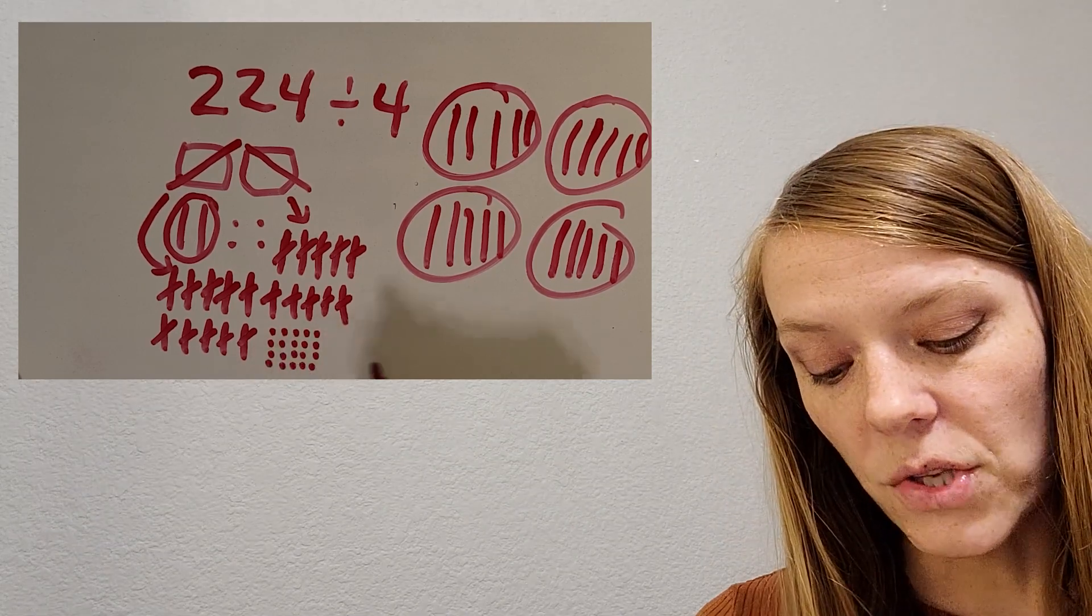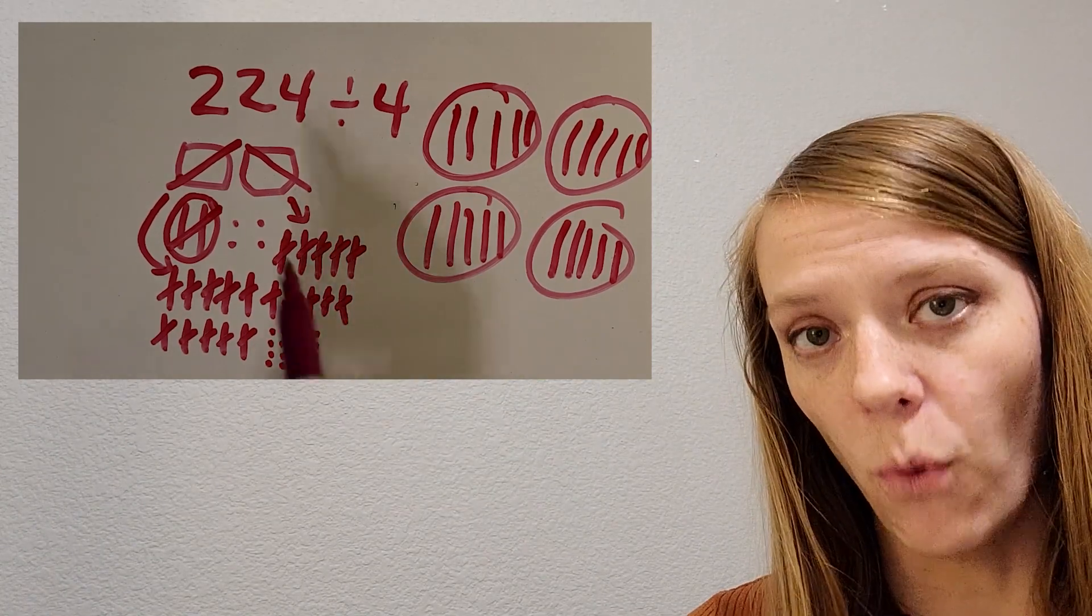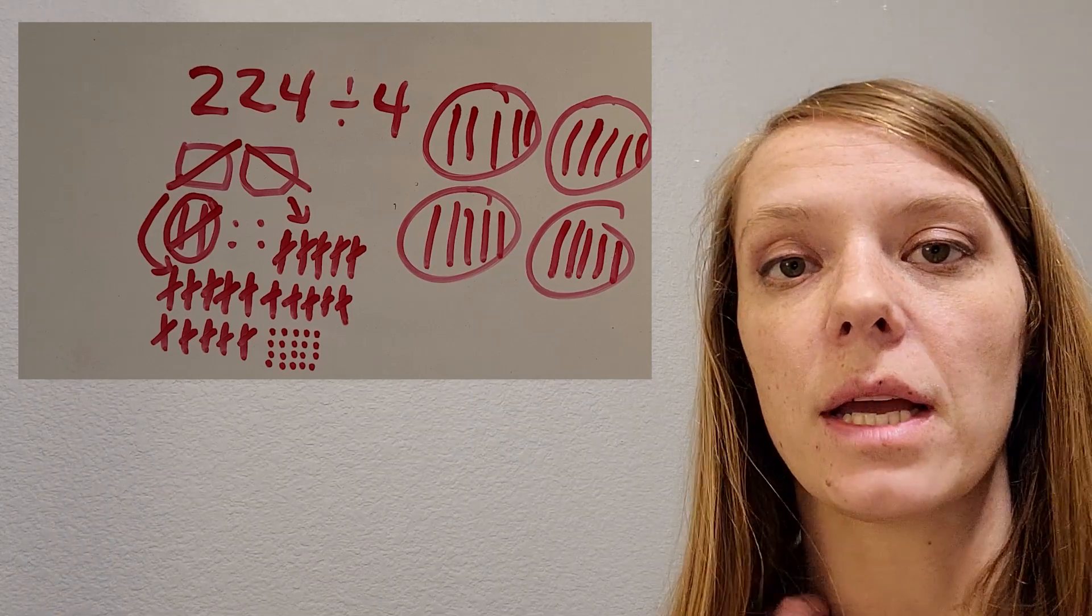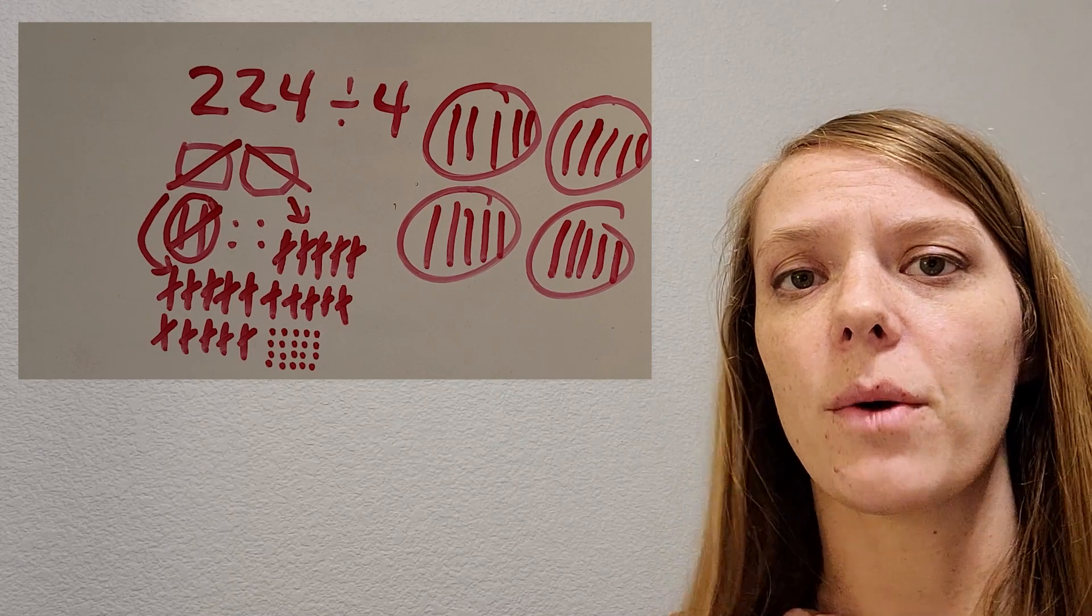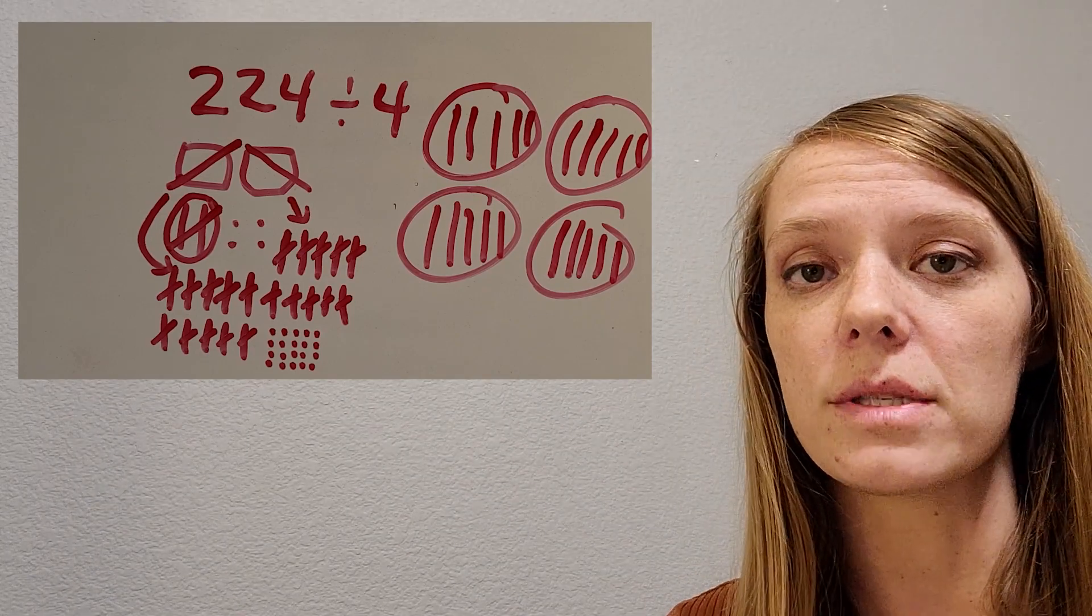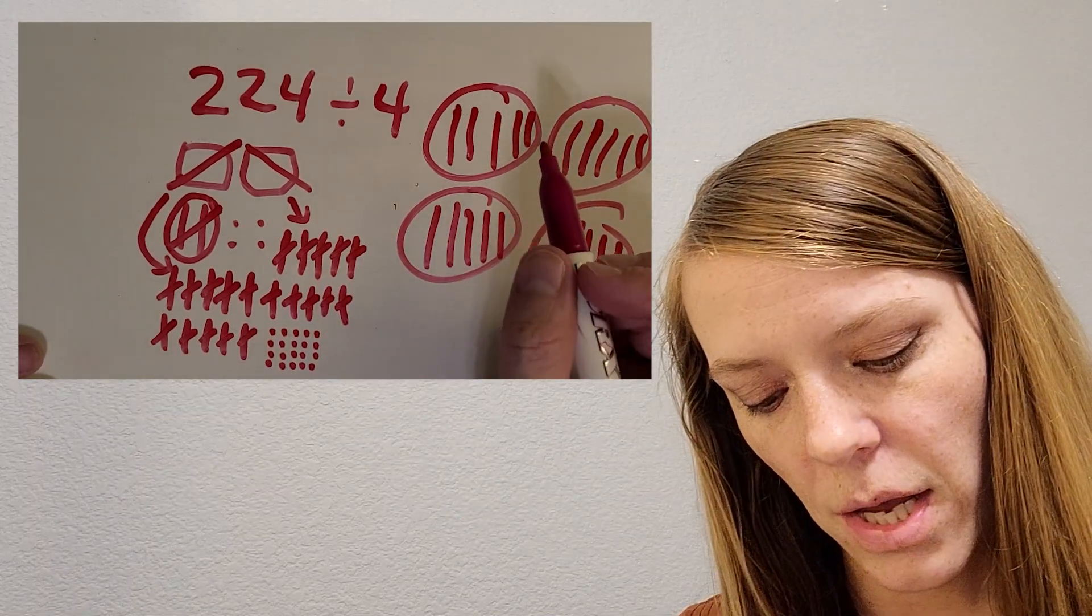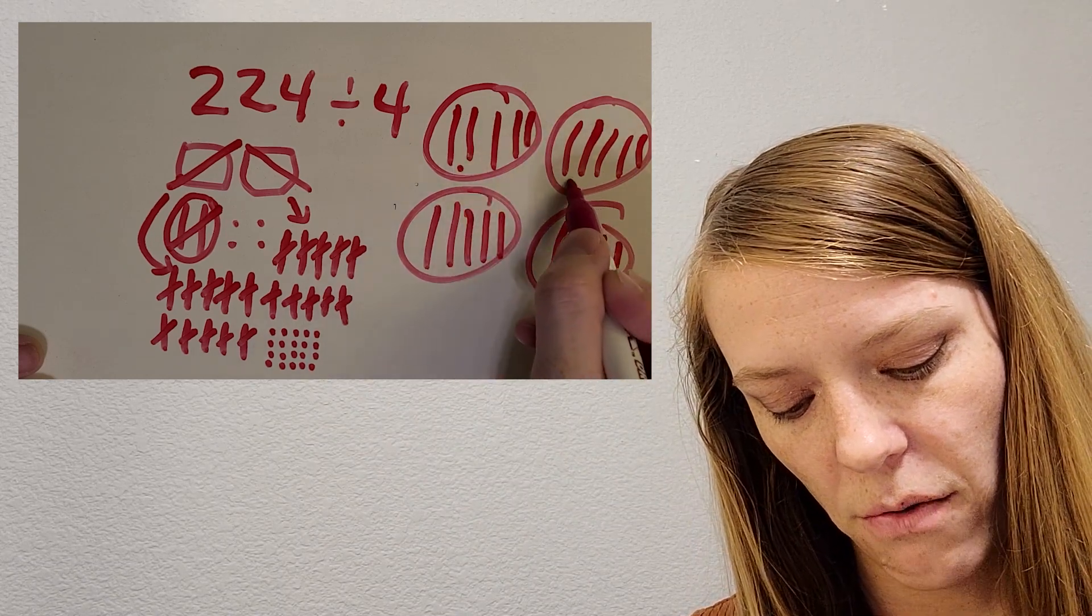Okay, so now I have 20 ones there. And then I've got four. So I have 24 ones to work with all together. And that sounds like a four fact. So I think this is going to work out perfectly. But let's check and see. Let's start separating those ones into the groups. Okay, so one, two, three, four, five, six,